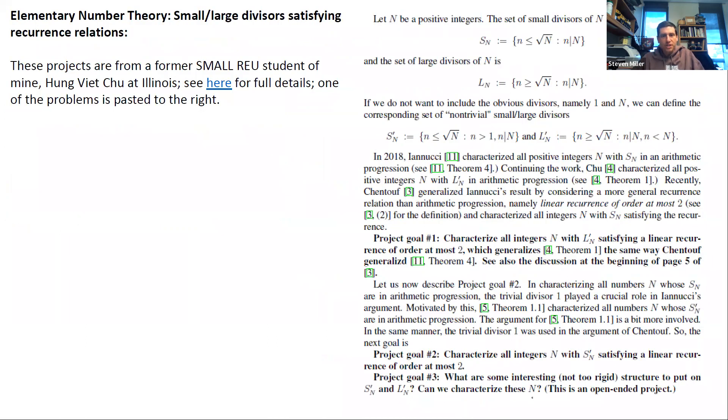The second set of problems is from a former SMALL student of mine who is now a graduate student in Illinois. So again, I'm just giving you a very brief introduction. So what you can do is you can look at numbers and look at small divisors and large divisors. And again, whenever you use words like small and large, it's always important to decide, well, what do you mean by small and large relative to what? And so the question is, if I want to characterize numbers whose divisors have certain properties, what can you say about such numbers? What kind of properties can you impose that you might find interesting, but also be mathematically tractable? And that, of course, is one of the greatest challenges is to balance between finding something that you're interested in and finding something where you actually have tools to make progress. So again, if you click on the link, you'll get far more details about this problem.